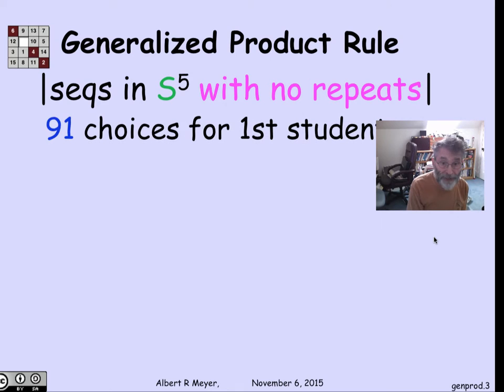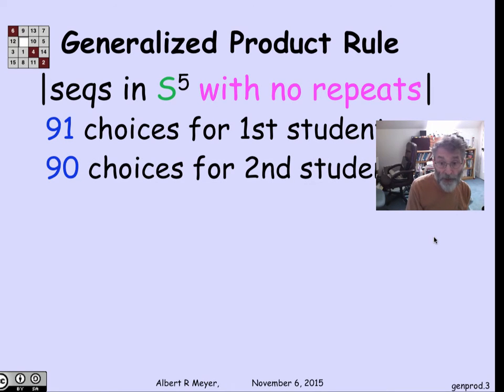Here's the logic. Suppose I'm going to list the five. There are 91 choices for the first student. How about the second student? The second student has to be different from the first, so there are 90 choices for the second student. What about the third student? I've used up two students, and the third has to be different, so that leaves 89 student choices.